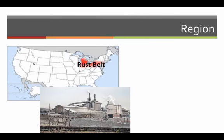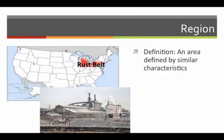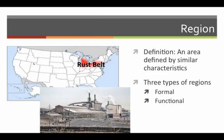A region is an area that shares similar characteristics. There are three general types of regions: formal, functional, and vernacular.